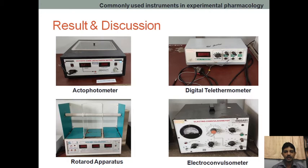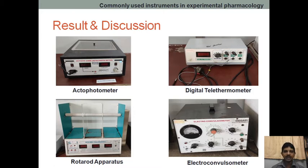In continuation to our previous part, where we have seen what are the different instruments available in our laboratory, here we are going to see about what instruments we have seen and what are the uses of those instruments. Generally, the actophotometer is used to check the CNS stimulatory or CNS depressant activity.